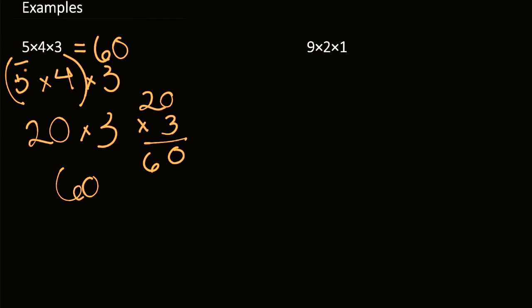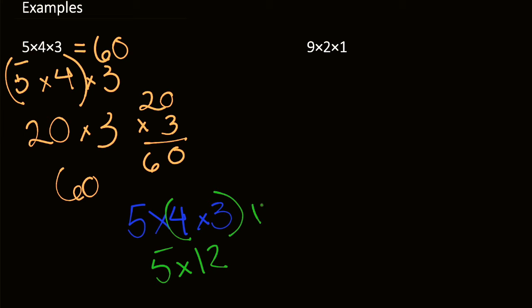In case you want to see that this actually works and you can flip it around, we can do 5 times 4 times 3 again and show the associative property with different grouping. We can do 4 and 3 this time. 4 times 3 is 12, then we have 5 times 12, which is equal to 60. So that's what we got before, which shows that this is the same.